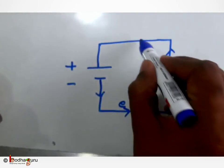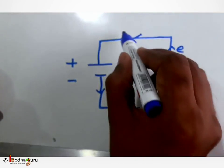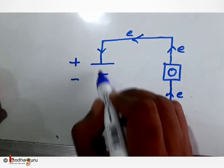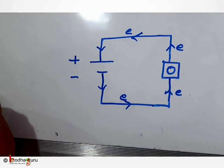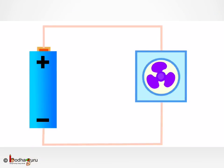And this flow of electrons, that is negatively charged particles through the wire, is called electric current. It flows through the wire, through the fan, and the fan rotates.